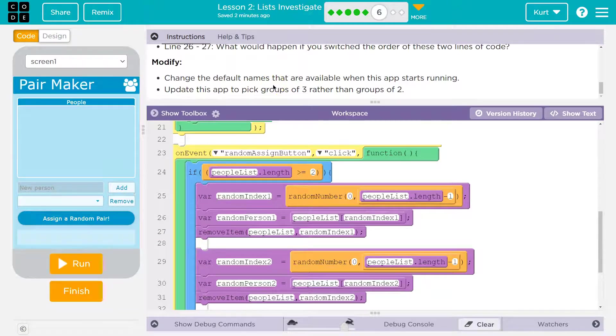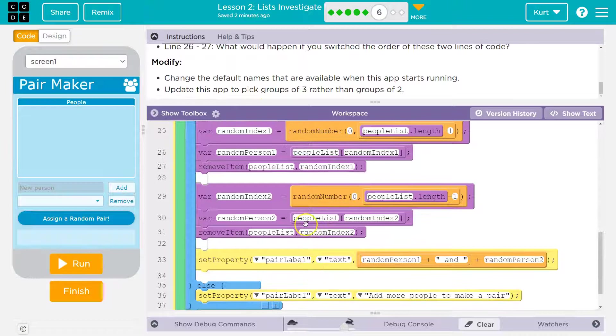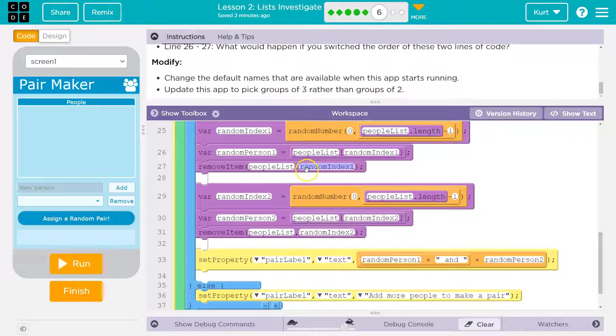What's this going to do? What would happen if you switch the order of 26 and 27? You would remove a person. So if we switch these, this would be removing this index, this person from the list before we even pushed it out to this variable. So that could cause an error if you only have a couple people on the list, or it will cause the wrong person to pop up.